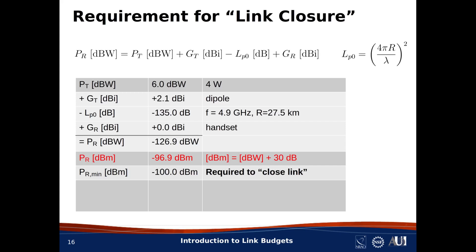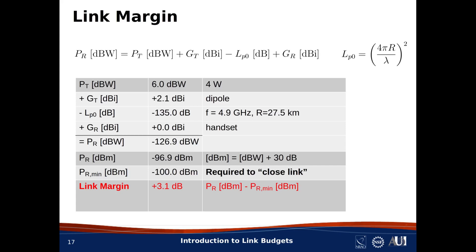Comparing minus 96.9 dBm to minus 100 dBm, we see that we have met the requirement. We say that the link is closed. In this business, it's common to define a link margin. In this example, link margin is defined to be the actual received power relative to the required received power. So, in this case, the link margin is minus 96.9 dBm minus minus 100 dBm, which is +3.1 dB. Since the link margin is greater than 0 dB, the link is closed.